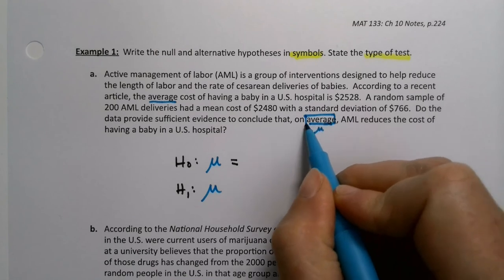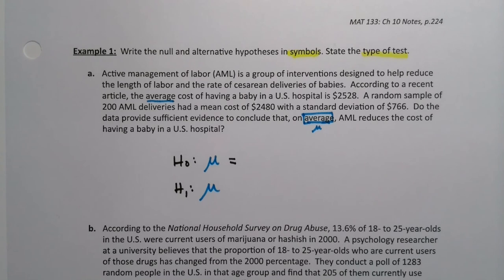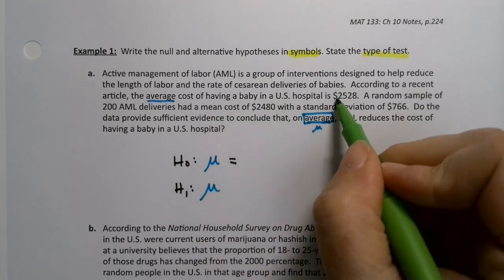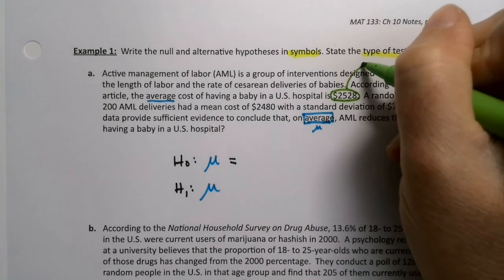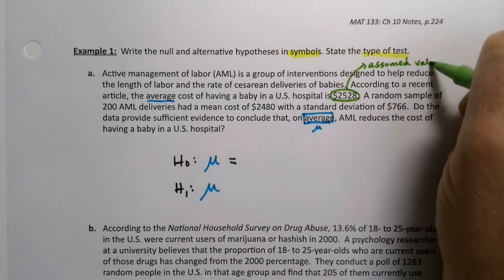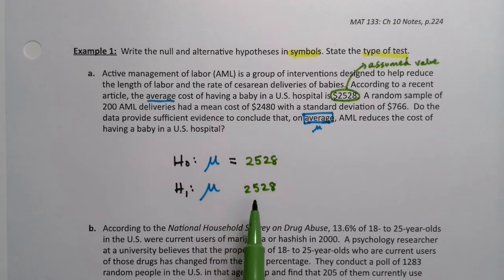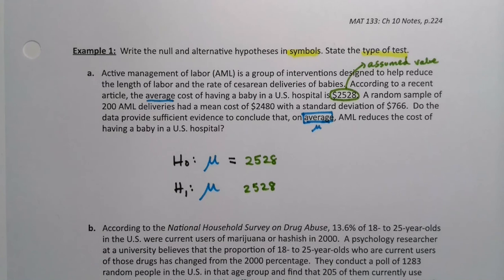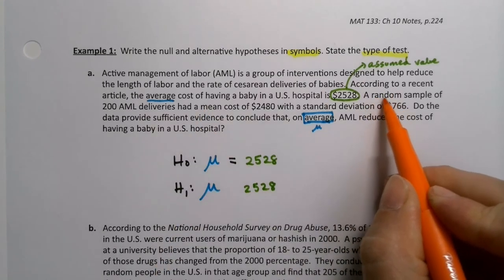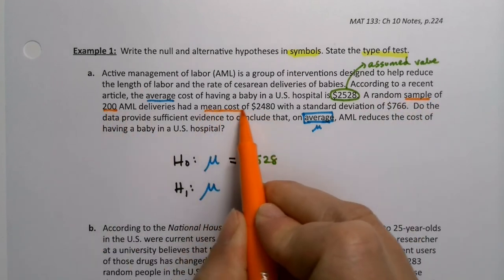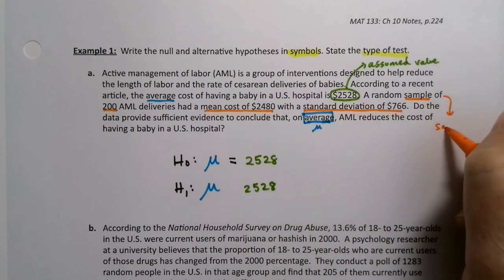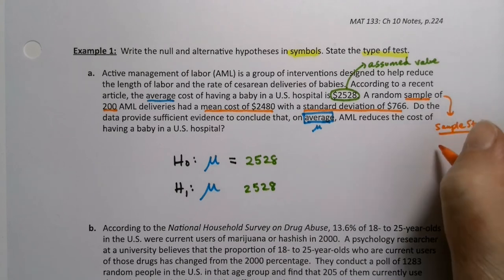So now that I know I'm talking about average, now I have to think about what is assumed unless I can prove otherwise. What's the population values versus what's the sample values? So the population values are in there somewhere. We've got to analyze it. So we assumed the cost of having a baby right here, this is the assumed value. So this is assumed to be true. So it's 2528, which by the way means it's the same number here. The null and alternative get the exact same number in both spots. Well, what about this 2480 and 766? What's going on there? Why isn't it that number? Because it says mean right next to it. See that mean right there? But it's talking about a sample. See this? A sample of 200 had a mean of 2480.